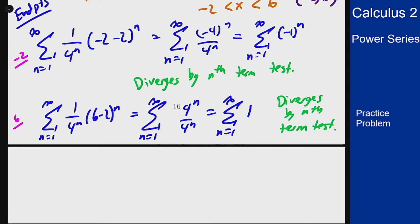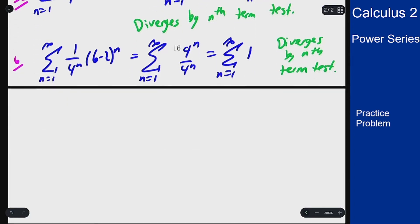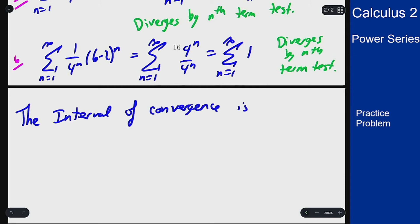Therefore, this power series converges absolutely on the interval and diverges at both endpoints. So for a final answer, the interval of convergence is just the open interval from -2 to 6.